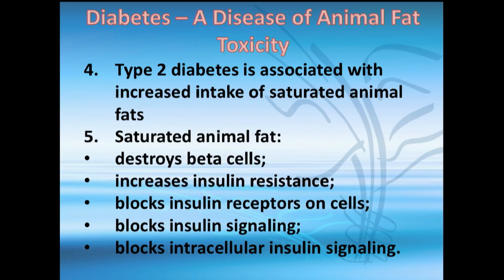To summarize: animal fat destroys beta cells — particularly fish — increases insulin resistance, blocks insulin receptors on the cells, blocks insulin signaling inside the cells, and blocks extracellular signaling.